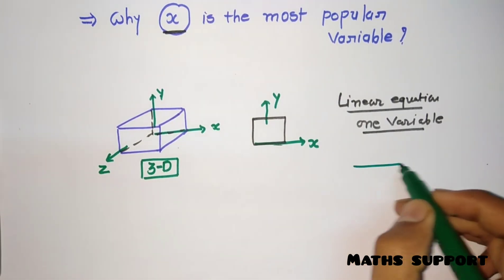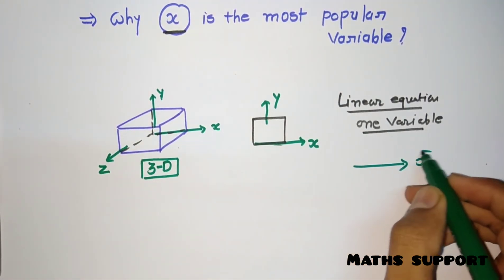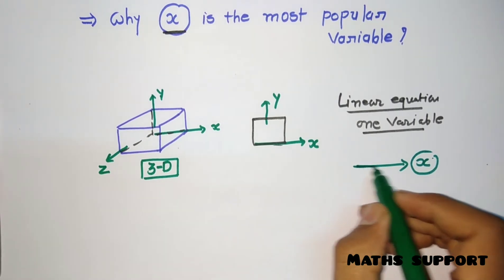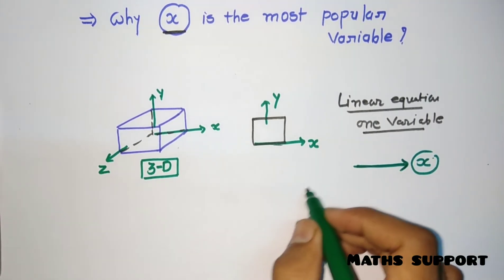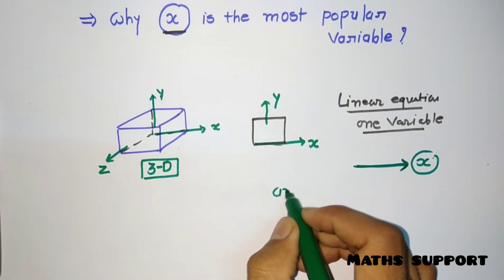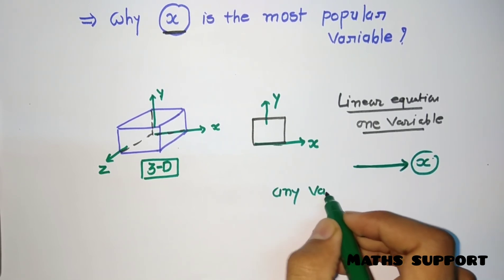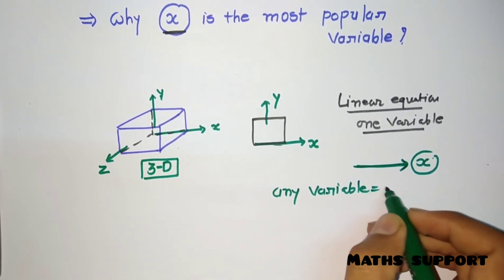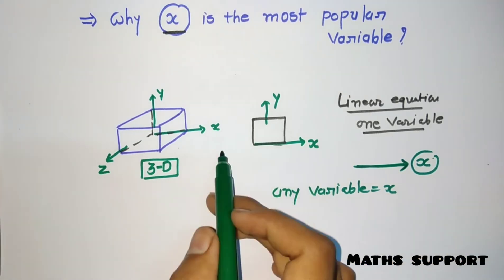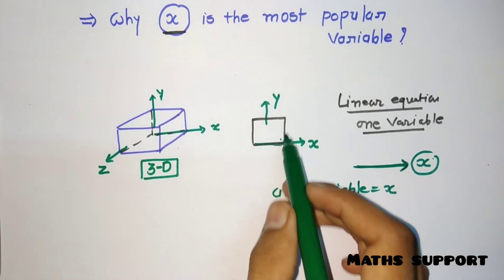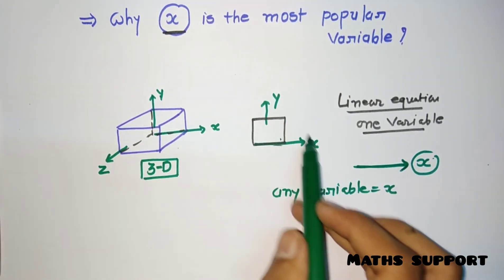So from the two parameters, if we move toward one parameter, then only one is left - that is the X axis. That is why from this concept we are taking any variable in mathematics as X. When there are two parameters, we are using X and Y.